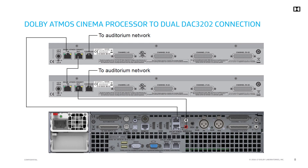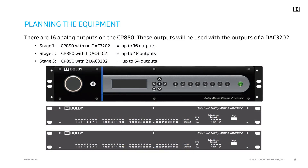When adding a second DAC-3202 into the system, simply add another unit into the loop by following the out-to-in method indicated here. There are 16 analog outputs on the CP850. These outputs can be used with the outputs of DAC-3202 units for a maximum of 64 outputs total. The three possible configurations are presented here.